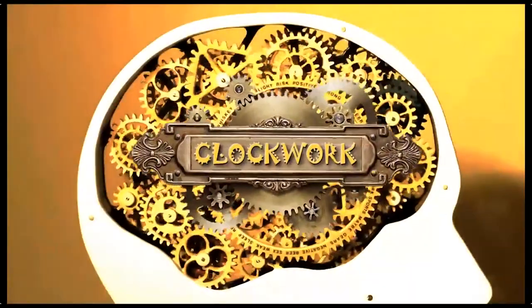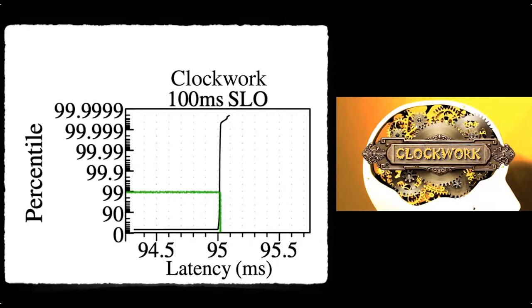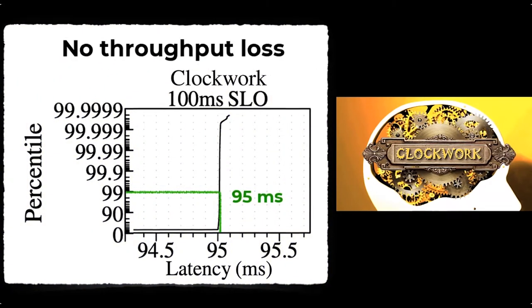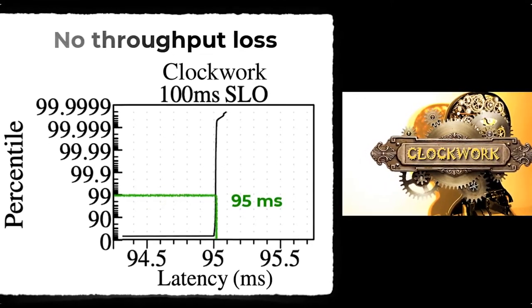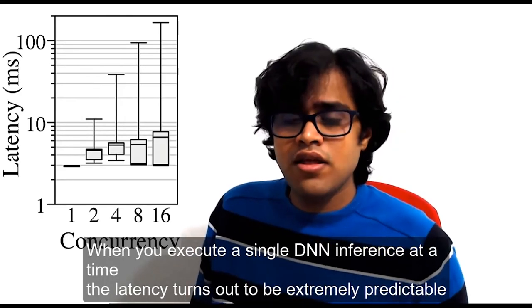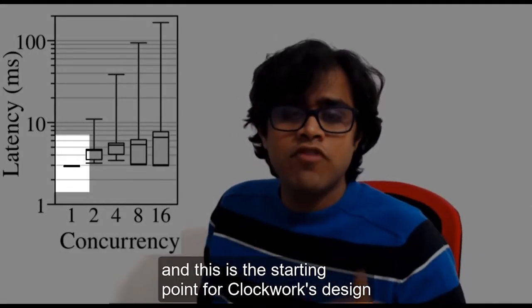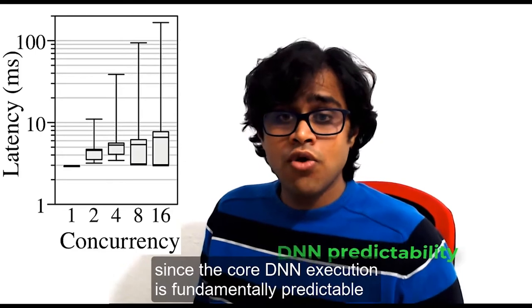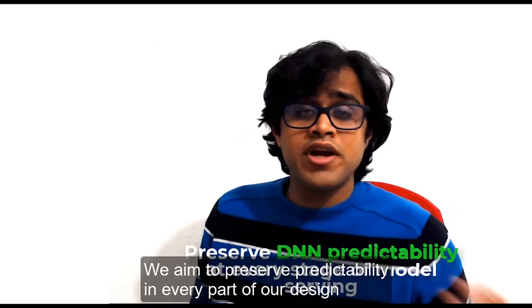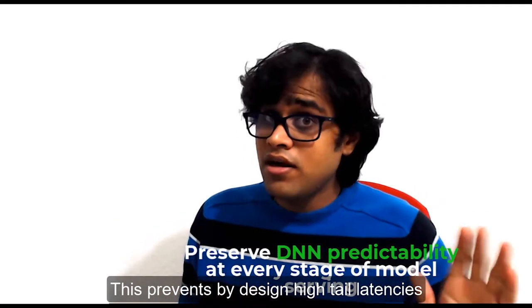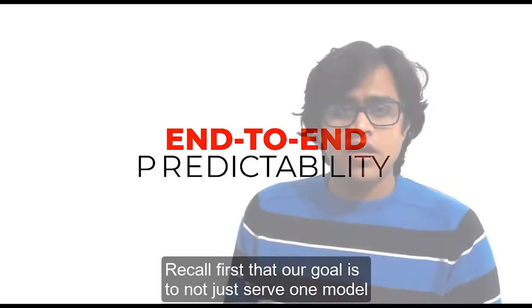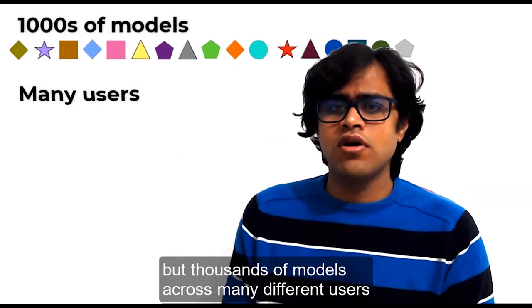Until now. Clockwork. When you execute a single DNN inference at a time, the latency turns out to be extremely predictable. And this is the starting point for Clockwork's design. Clockwork adopts a contrasting approach to previous systems when it comes to end-to-end model serving. Since the core DNN execution is fundamentally predictable, we aim to preserve predictability in every part of our design. This prevents, by design, high tail latencies.